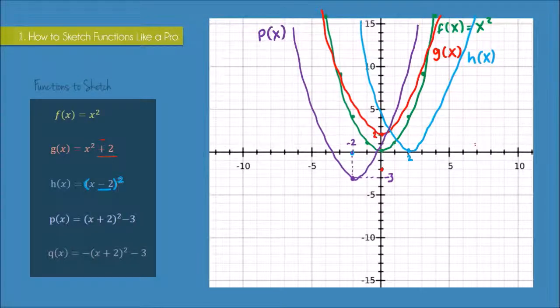All right, so the last one here is q(x). So again, we've got a very similar setup—you can see that the coordinate of the turning point is also going to be (-2, -3) because we've got our plus 2 in the bracket and our minus 3 at the end. The only difference is this minus.